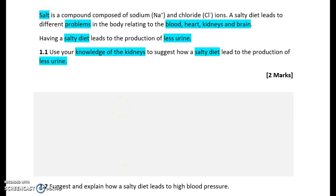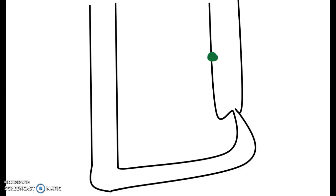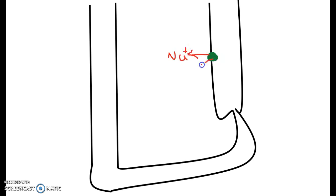If we think about this question and the loop of Henle, we can work this out. This is the ascending limb and this is the descending limb of the loop of Henle. At the ascending limb, we have the sodium chloride pump, which pumps out sodium ions and chloride ions by active transport using ATP, because it's going from a low concentration to a high concentration.